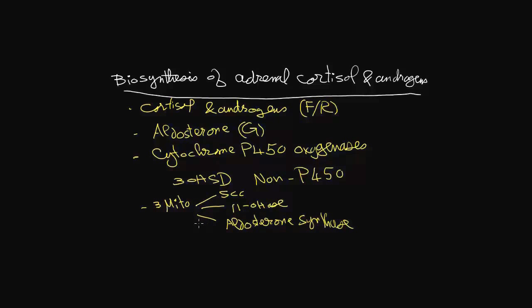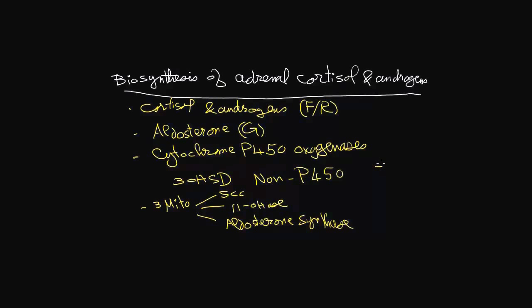We have two functional cortical zones: zona glomerulosa, characterized by the production of aldosterone because it has the enzyme aldosterone synthase, which is missing in zona fasciculata reticularis. Two steroidogenic enzymes are produced by the smooth endoplasmic reticulum: 17-alpha-hydroxylase, which also possesses 17-20-liase activity functioning in androgen biosynthesis, and the second enzyme is 3-hydroxysteroid dehydrogenase, which is a non-P450 enzyme.